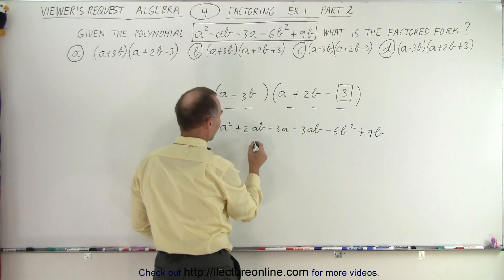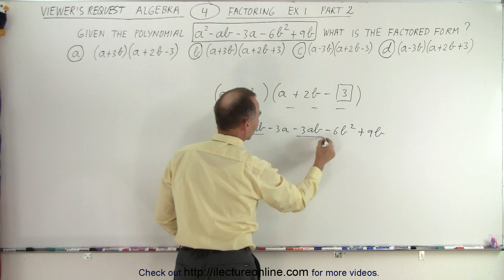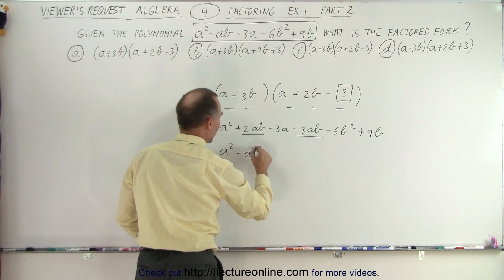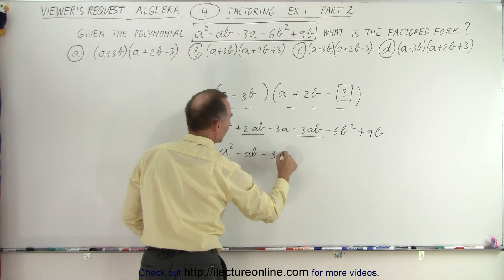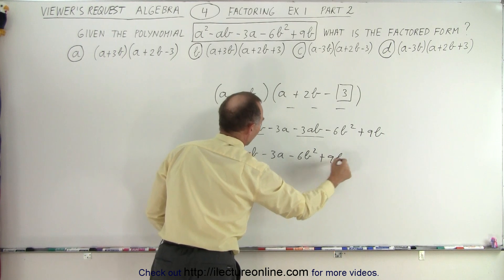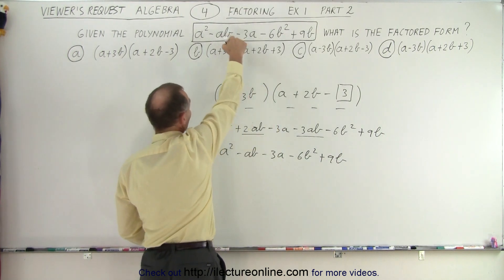Then I realized that I have a plus two a b and a minus three a b, which combine. So I end up with a squared, minus a b, minus three a, minus six b squared, and plus nine b. And this should be the same as what I have over there.